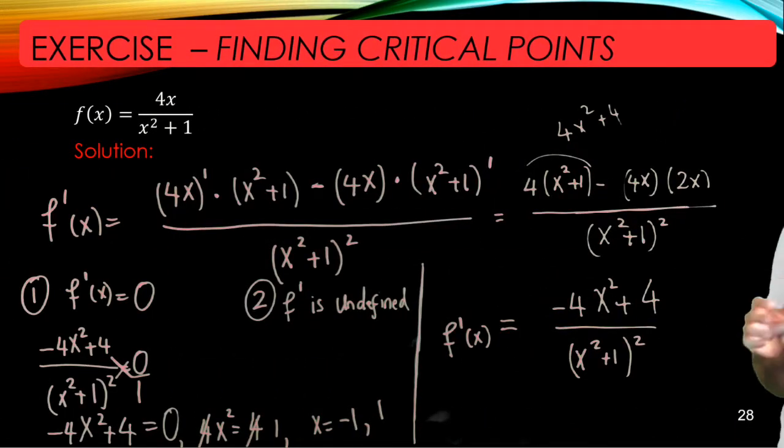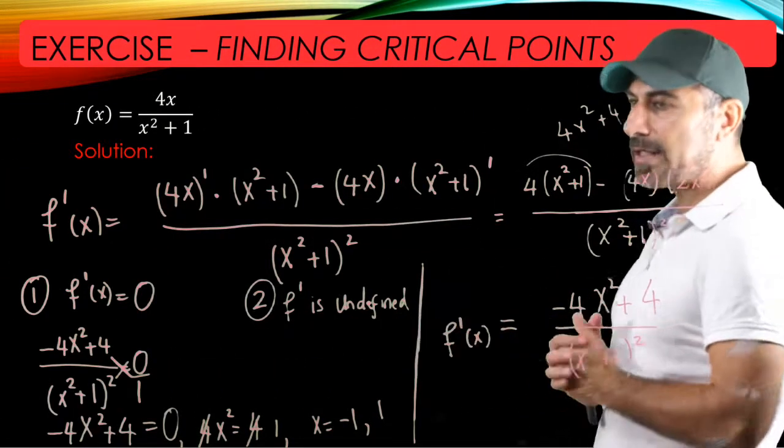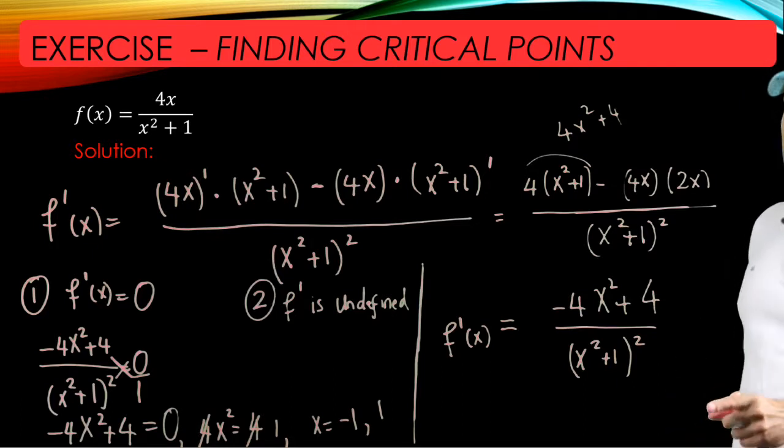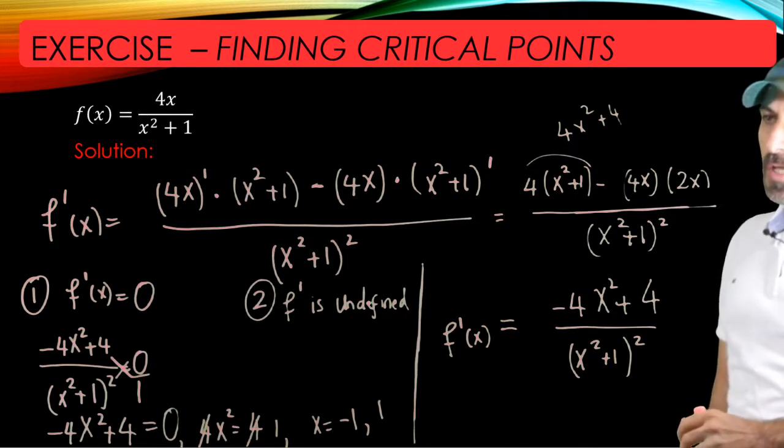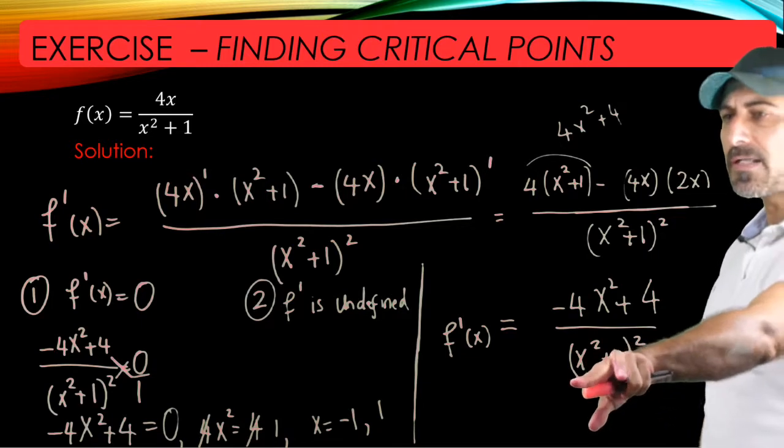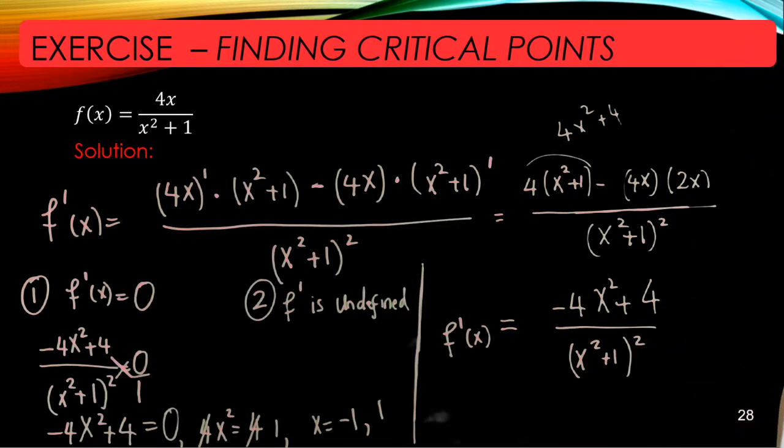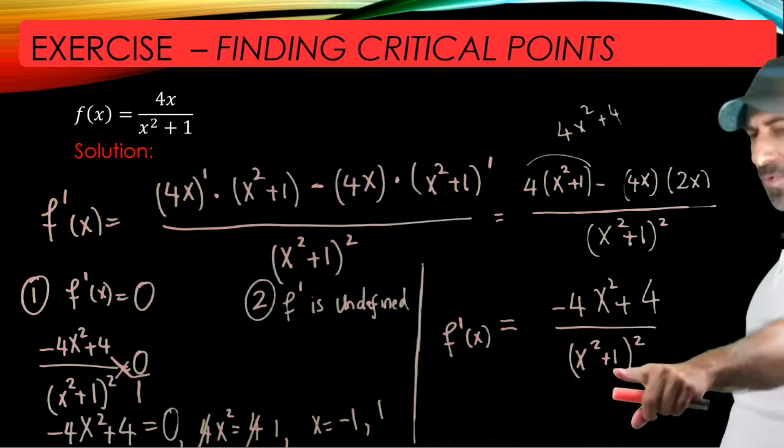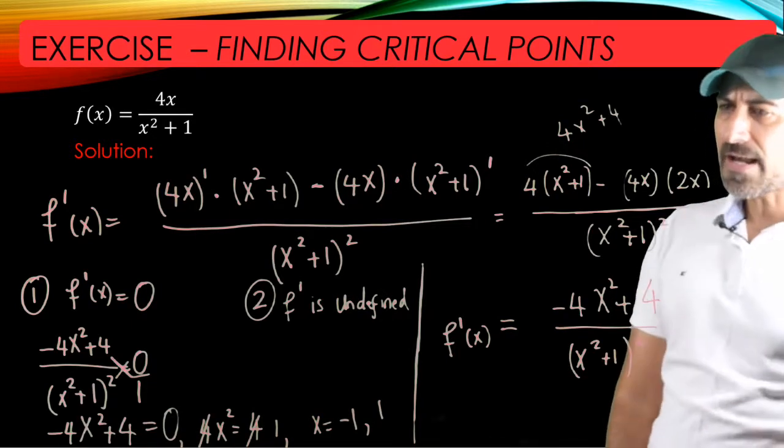For the second part, we're going to look for x's where f prime is undefined. Well, since it's a rational expression, f prime is undefined only if the bottom of the quotient is 0. But as you see, 1 plus x squared can never ever be 0.